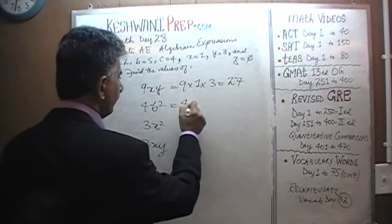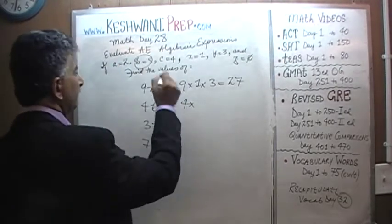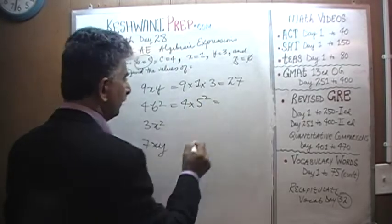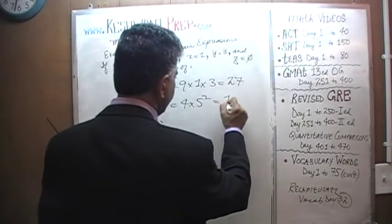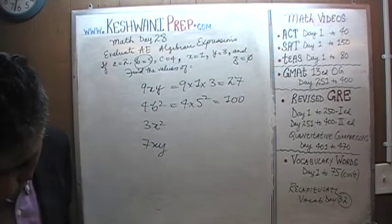4B squared. 4 times B squared. B is 5, so it's 5 squared. 5 squared is 25, 25 times 4 is 100.